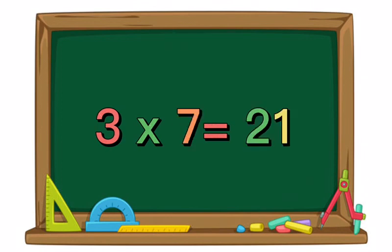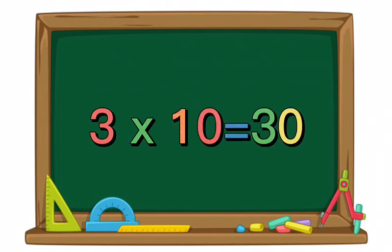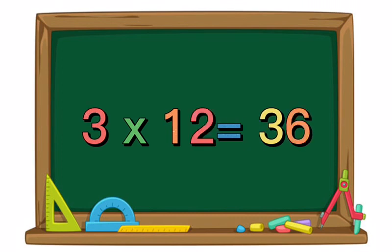3 times 7 equals 21. 3 times 8 equals 24. 3 times 9 equals 27. 3 times 10 equals 30. 3 times 11 equals 33. 3 times 12 equals 36.